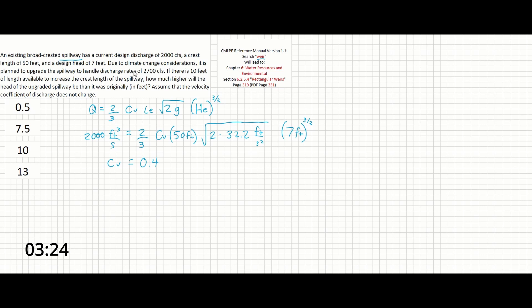So the new discharge rate is 2700 cubic feet per second, and that's going to be equal to 2 over 3. CV is now 0.4. The spillway isn't 50 feet anymore, but 50 plus the 10 additional. So we have 60 feet here, then times 2 times 32.2 feet per second squared, square rooted. And now HE is our unknown term that we're solving for.